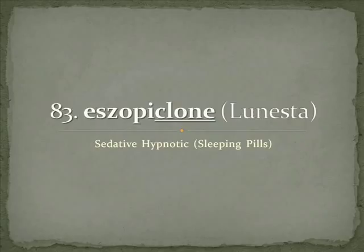Let's start with eszopiclone. The S tells us it's the S-isomer, and 'clone' is the stem — but it doesn't really help us because there aren't that many other drugs in the class. It's easier to look at the brand name Lunesta: think of 'Luna' for moon, and 'est' to rest. We also just call these sleeping pills in the vernacular.